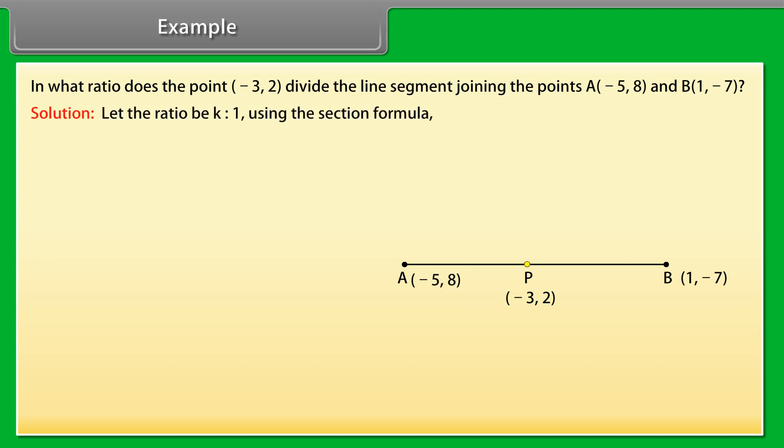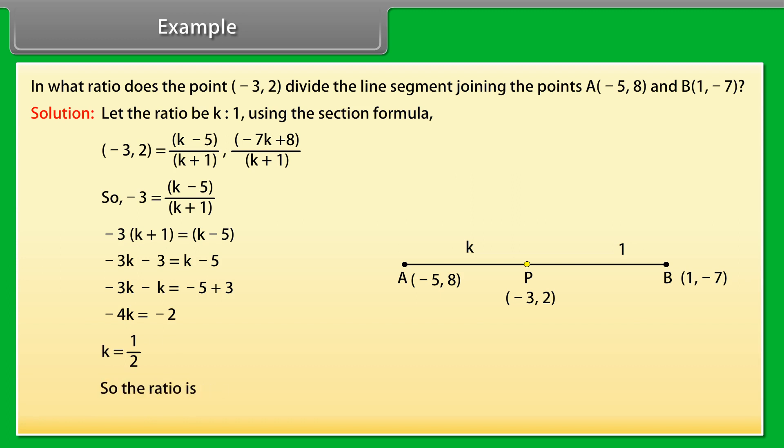Solution: Let the ratio be k is to 1. Using the section formula, minus 3 is equal to k minus 5 by k plus 1. Minus 3 into k plus 1 equals k minus 5. Minus 3k minus 3 equals k minus 5. Minus 3k minus k equals minus 5 plus 3. Minus 4k equals minus 2. K is 1 by 2. So the ratio k is to 1 is equal to 1 is to 2.